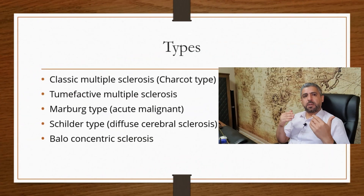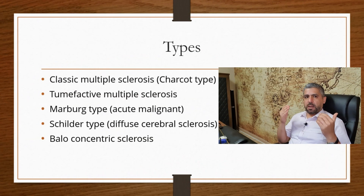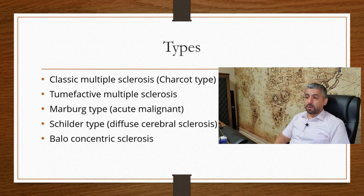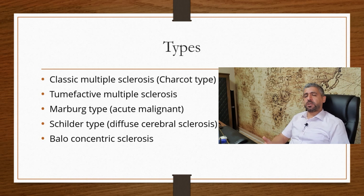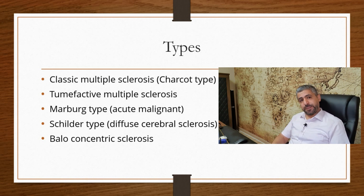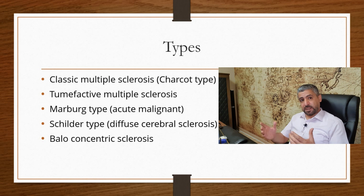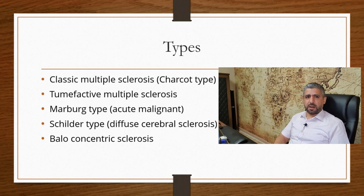There are multiple types of MS. The most common one is the classic type, called the Charcot type. There are other, much less common types, including Tumefactive multiple sclerosis, the Marburg type which is an acute malignant type, the Schilder type which is diffuse cerebral sclerosis, and Balo concentric sclerosis. Due to their rarity, I will talk only about Tumefactive MS in addition to the classic type in this episode.